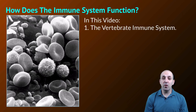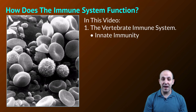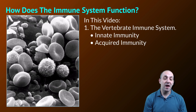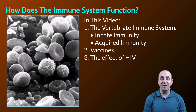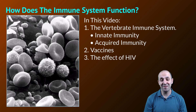In this video, we're going to look at the vertebrate immune system and how it functions. We're going to look at the processes involved in innate immunity and in acquired immunity. We're going to talk a little bit about how vaccines work. And then we're going to look at the effect of the HIV virus and how it leads to the development of AIDS if it goes untreated.